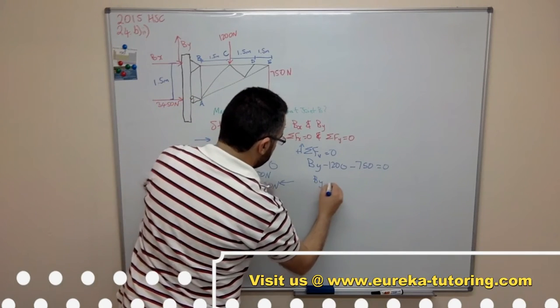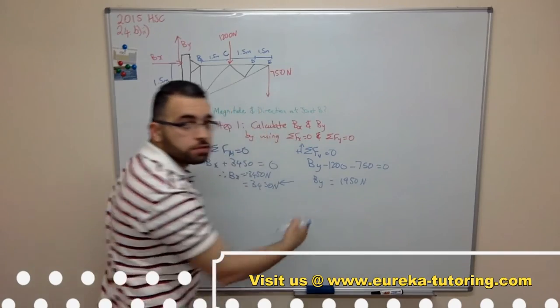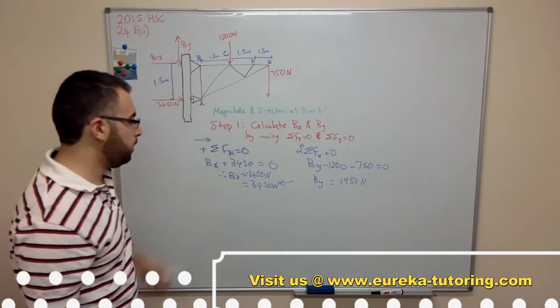So By equals 1950 newtons. It's positive so we've assumed correctly and it's going up.